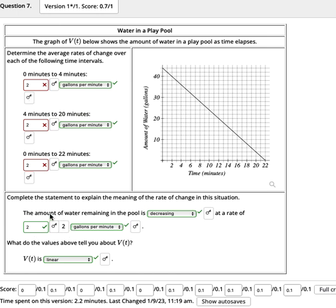So the reason is, right here, you got it totally right. The amount of water remaining in the pool is decreasing at a rate of two gallons per minute. So since it's decreasing, if we don't use that word, we would have to say at a rate of minus two gallons per minute.